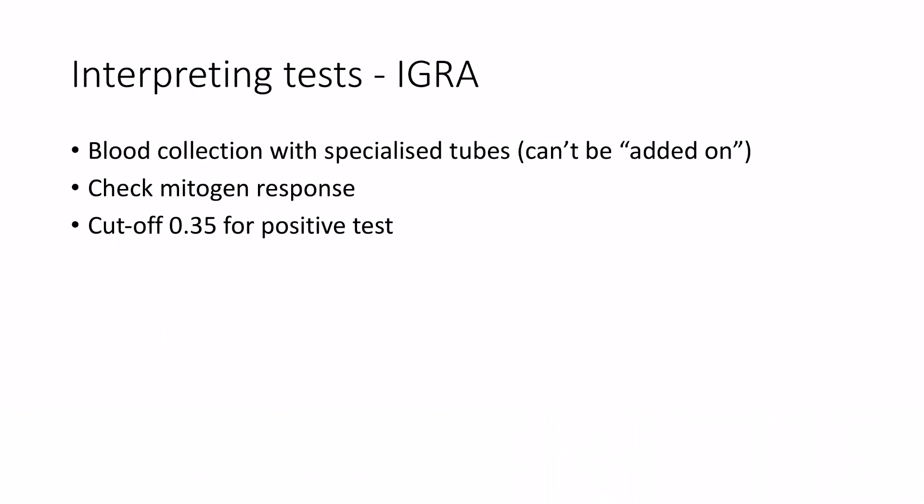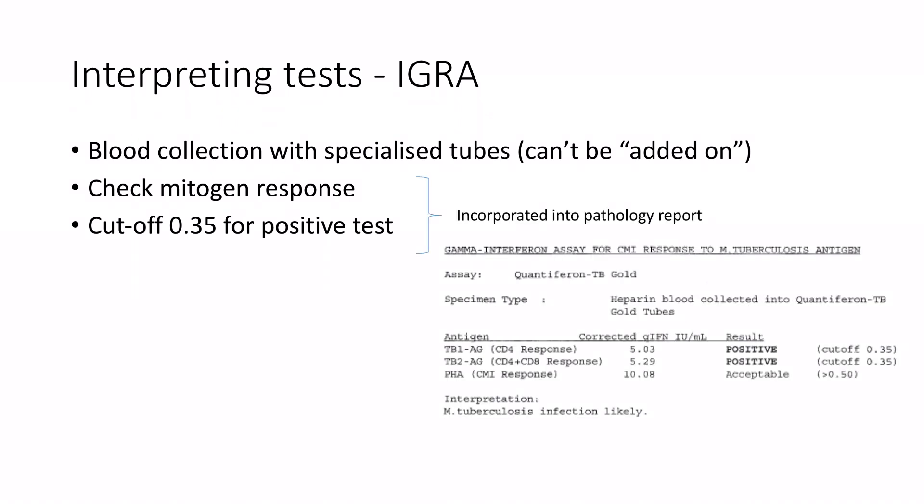When you order an IGRA, on the other hand, this will come as a commercial assay and it will provide a report something like this one. The mitogen, or the PHA here at the bottom, is a check to make sure that there's enough of an immune system response for the test result to be reliable, so it's listed as acceptable. As long as that's the case, a result of more than 0.35 in either of the other tubes is considered a positive result, and the report should also provide a conclusion below. Like with any test, false positives and false negatives are possible, but selecting people who are at background risk of TB exposure makes that less likely for both tests.